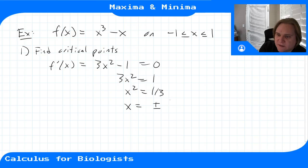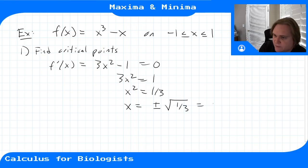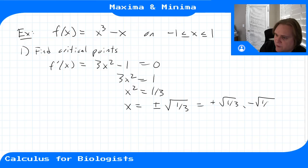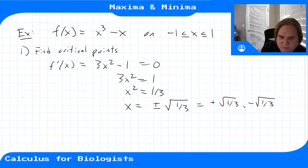That gives x = ±√(1/3). So we have two critical points: positive √(1/3) and negative √(1/3).